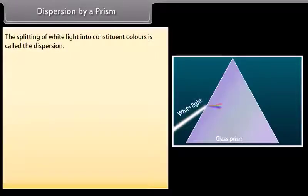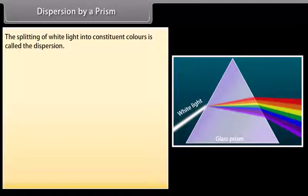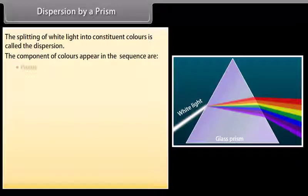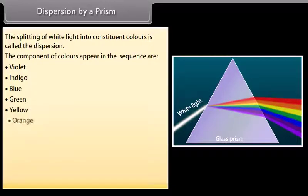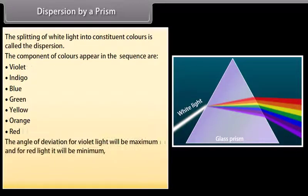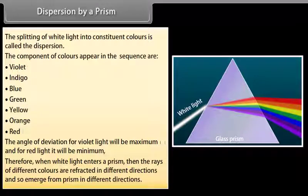Dispersion by a prism. The splitting of white light into its constituent colours is called dispersion. The colours appear in the sequence: violet, indigo, blue, green, yellow, orange, and red. The angle of deviation for violet light is maximum and for red light it is minimum. Therefore, when white light enters a prism, rays of different colours are refracted in different directions and emerge from the prism in different directions.